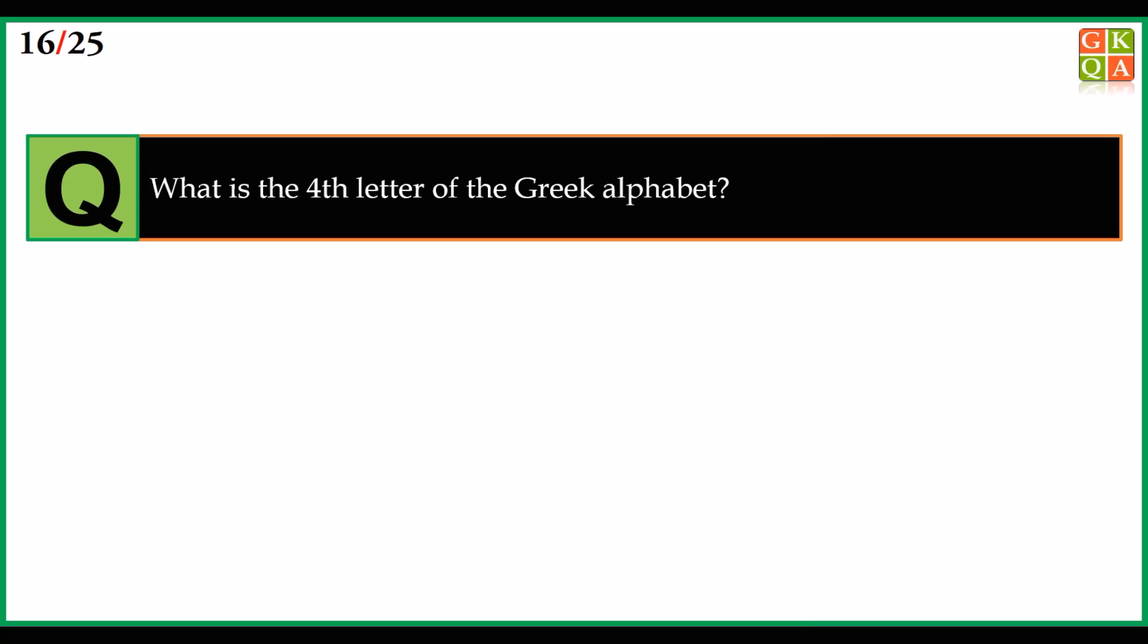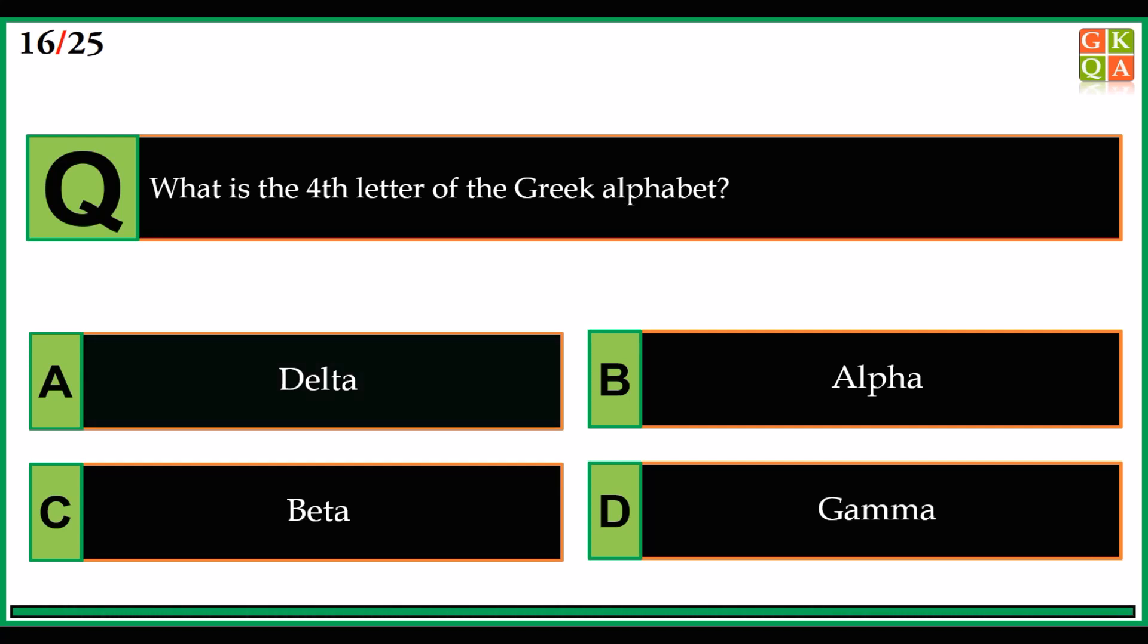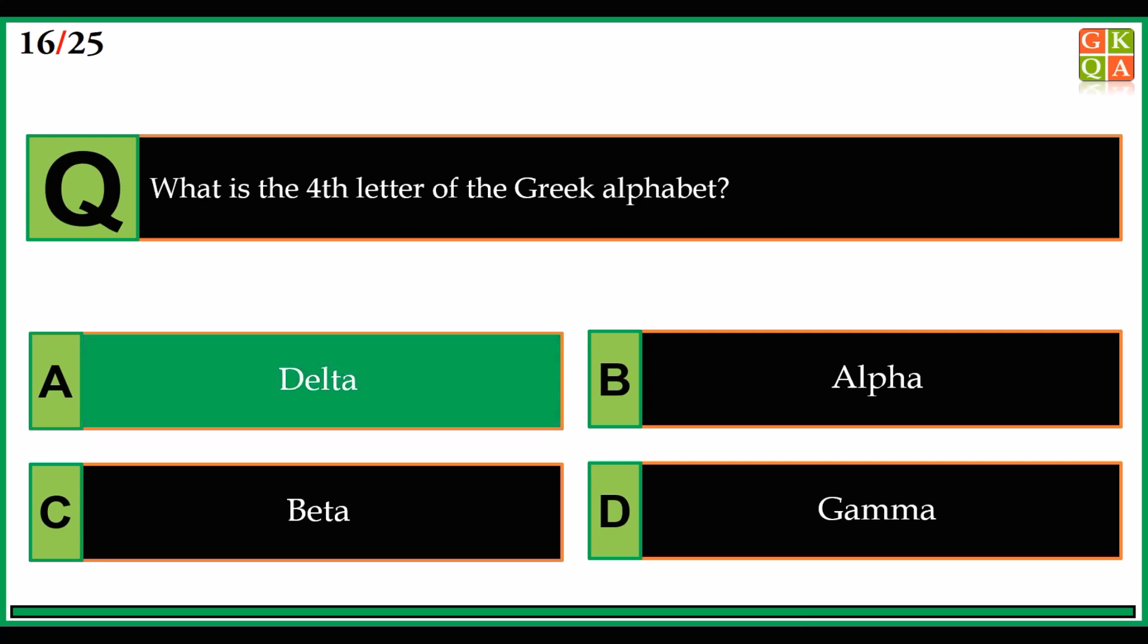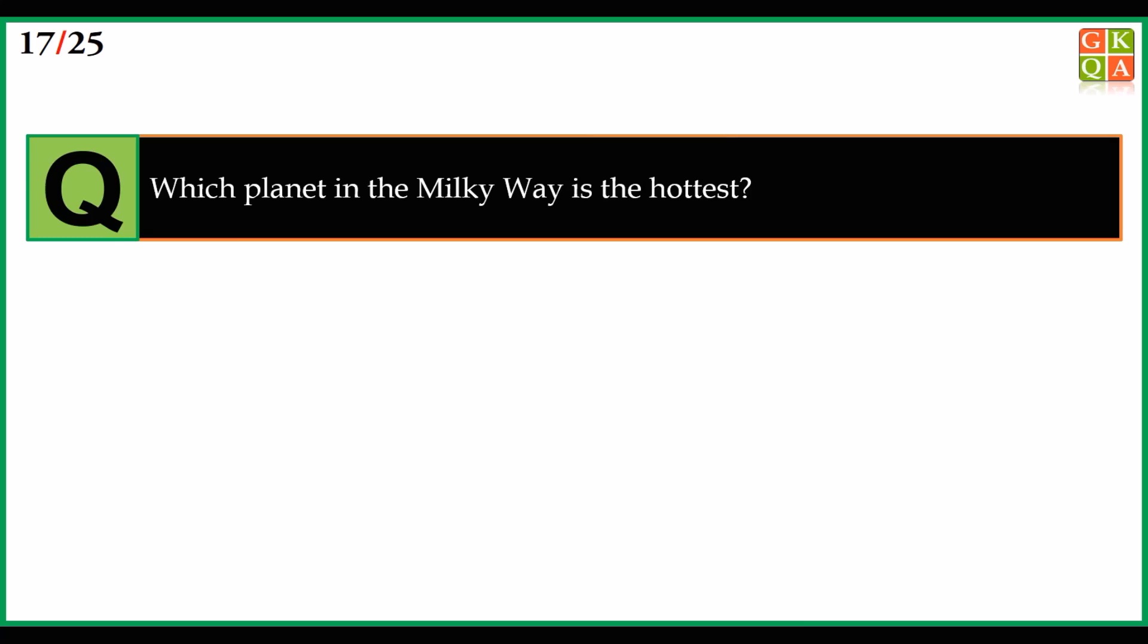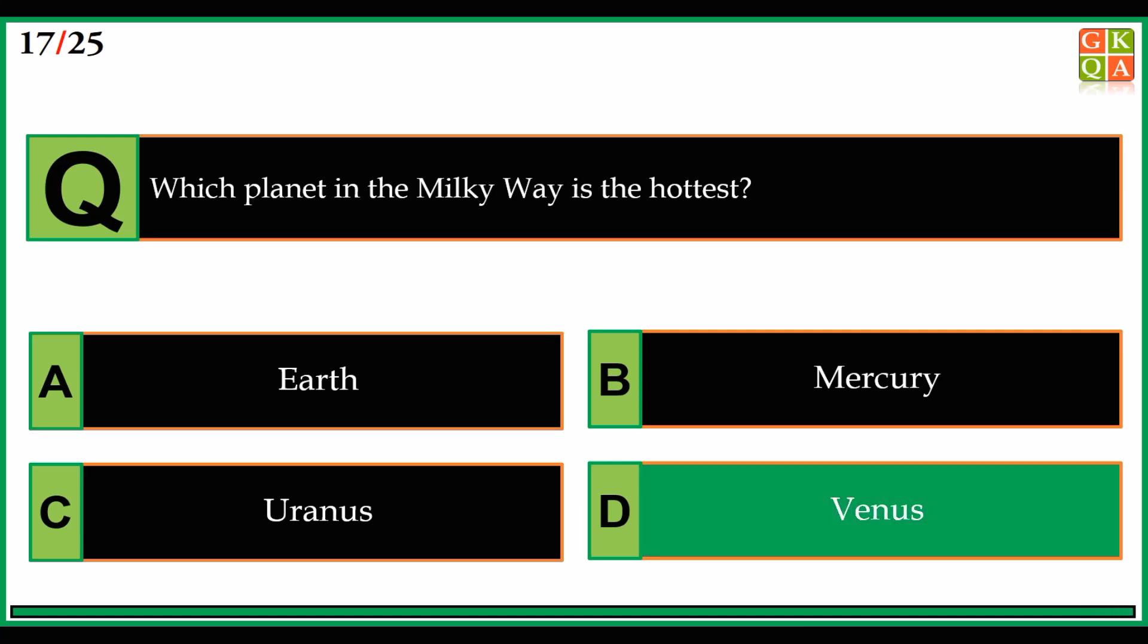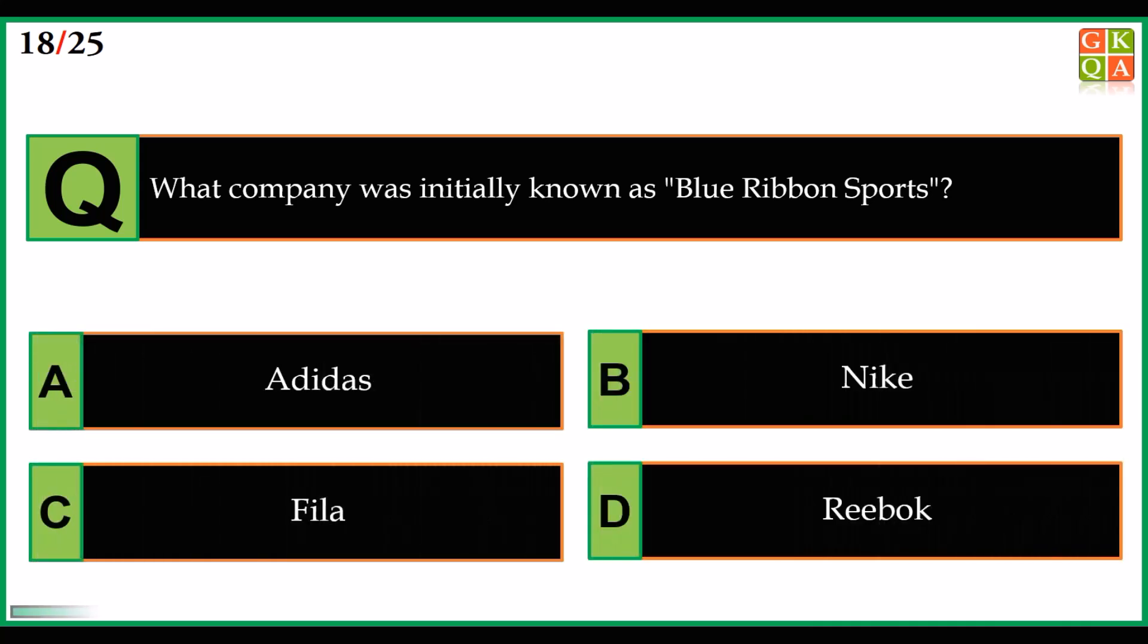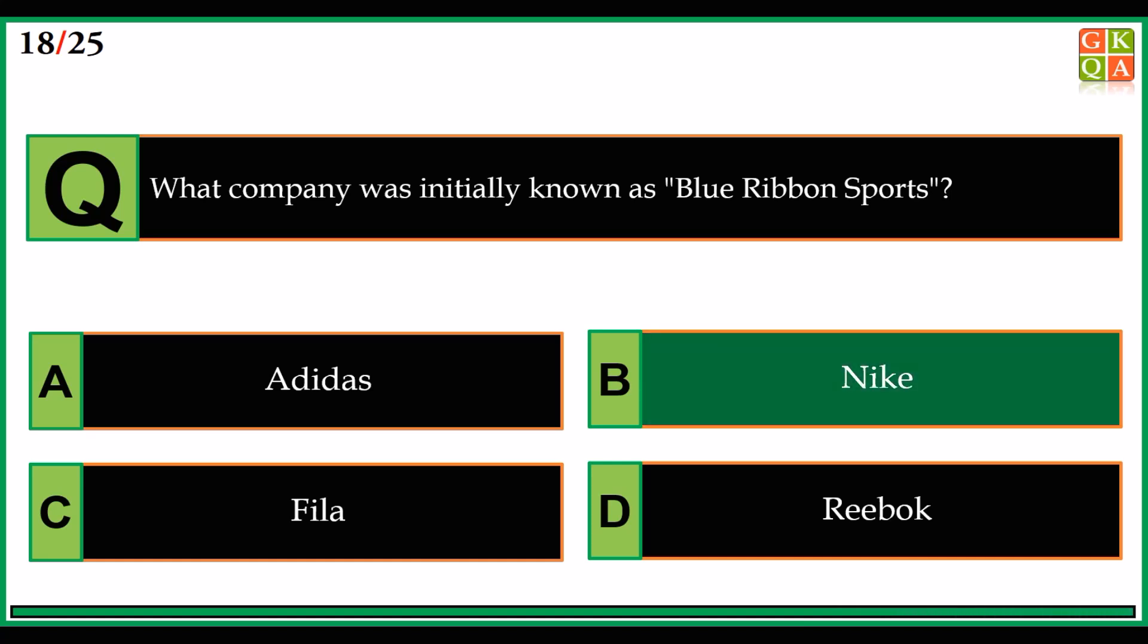What is the fourth letter of Greek alphabet? Answer: option A, delta. Which planet in the Milky Way is the hottest? Answer: option D, Venus. What company was initially known as Blue Ribbon Sports? Answer: option B, Nike.